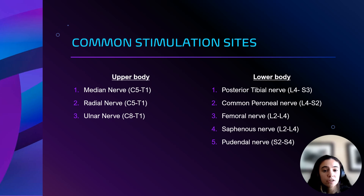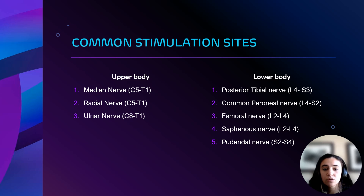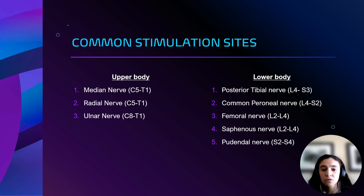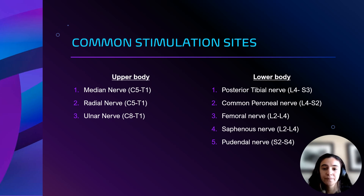All of these nerves cover certain sections of the spinal cord, which is shown in parentheses. The median nerve covers most of the upper body from C5 to T1, whereas the pudendal nerve covers a small portion of the lower body from S2 to S4.